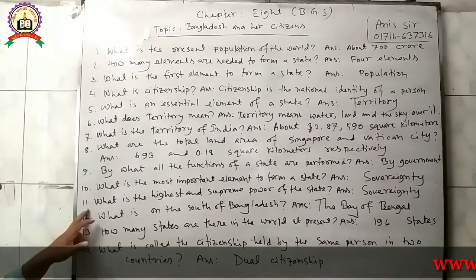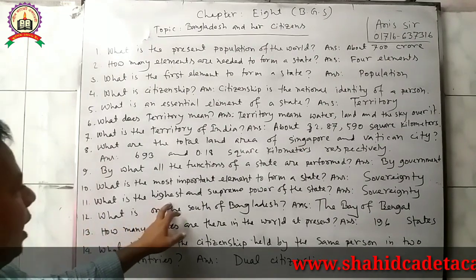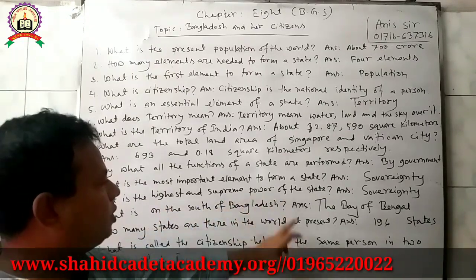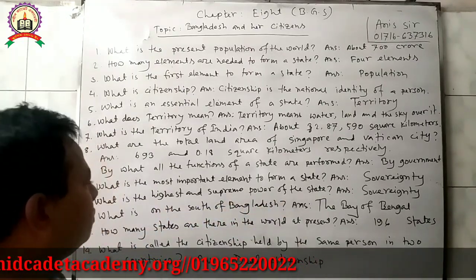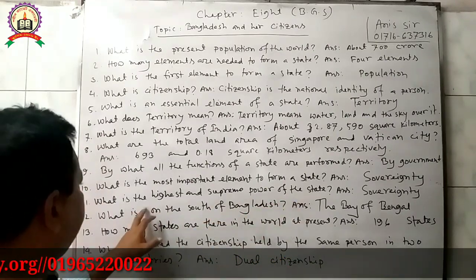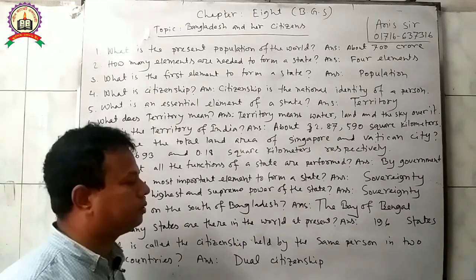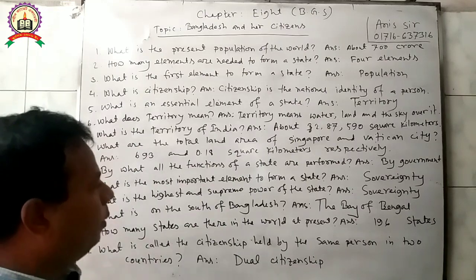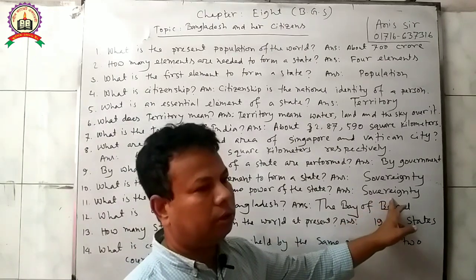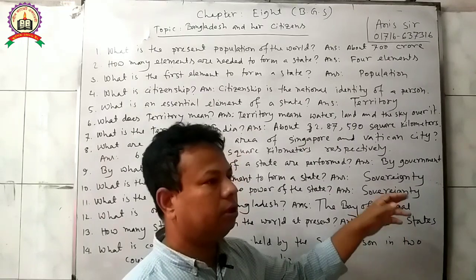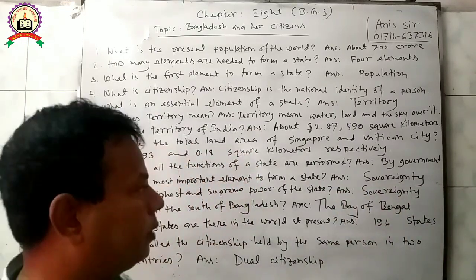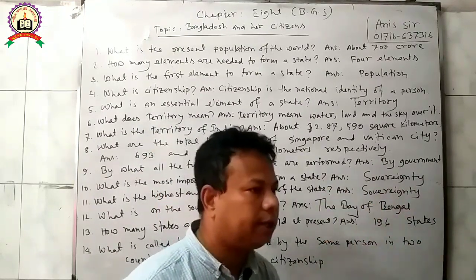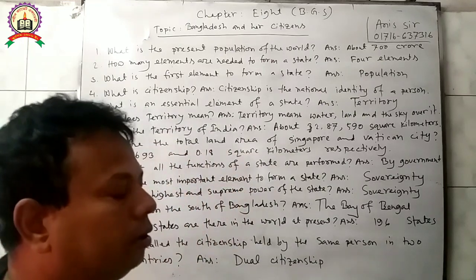Question 11: What is the highest and supreme power of the state? Answer: Sovereignty is the highest and supreme power of the state. By sovereignty, a country remains free from other countries or other powers.